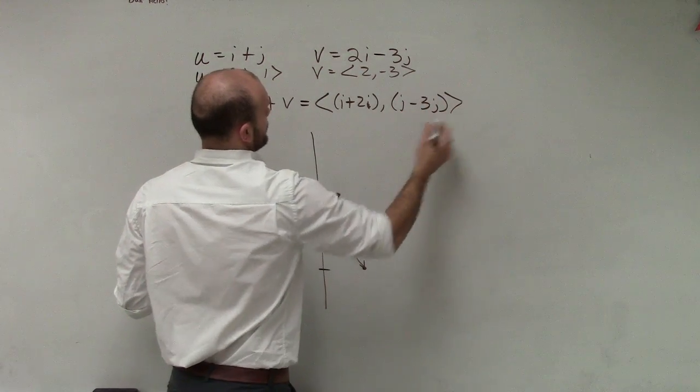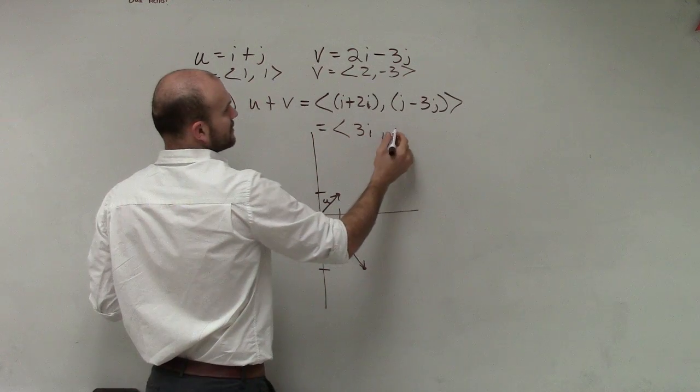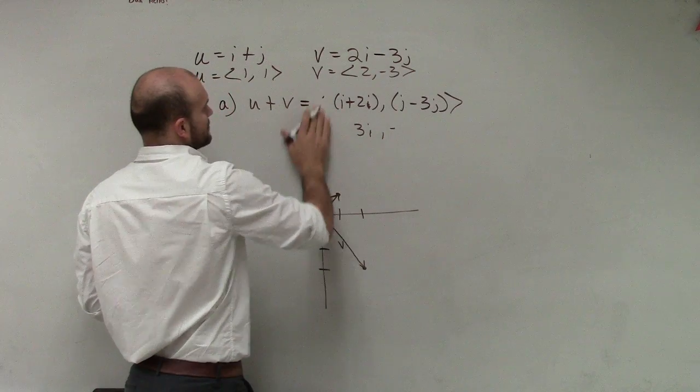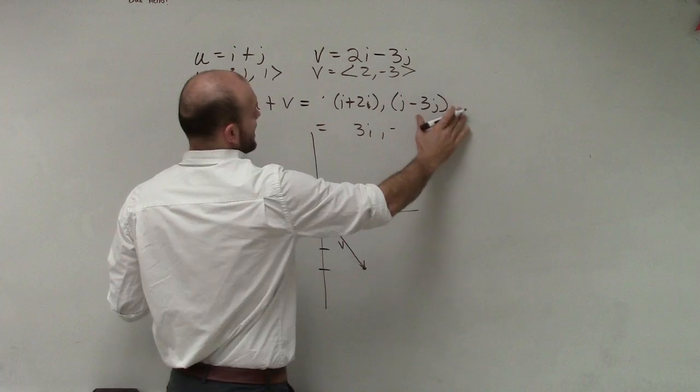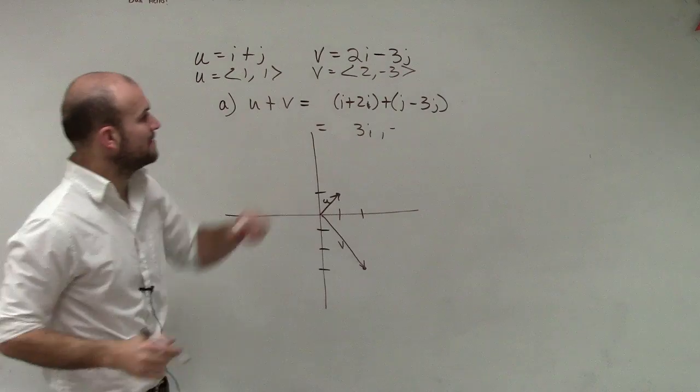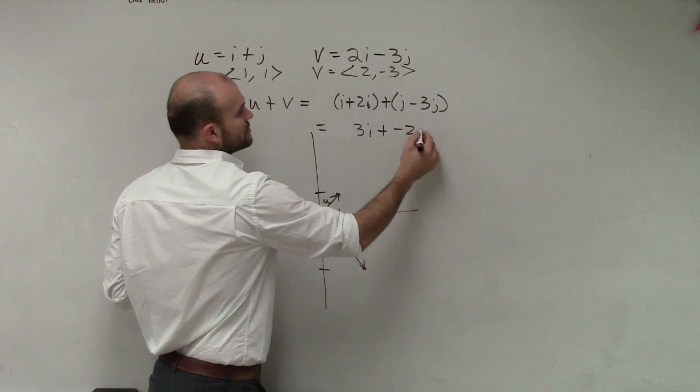which then equals 3i comma... or what am I doing with the vectors? We're writing these in the i and j's. There you go. So then we can have 3i plus a negative 2j.